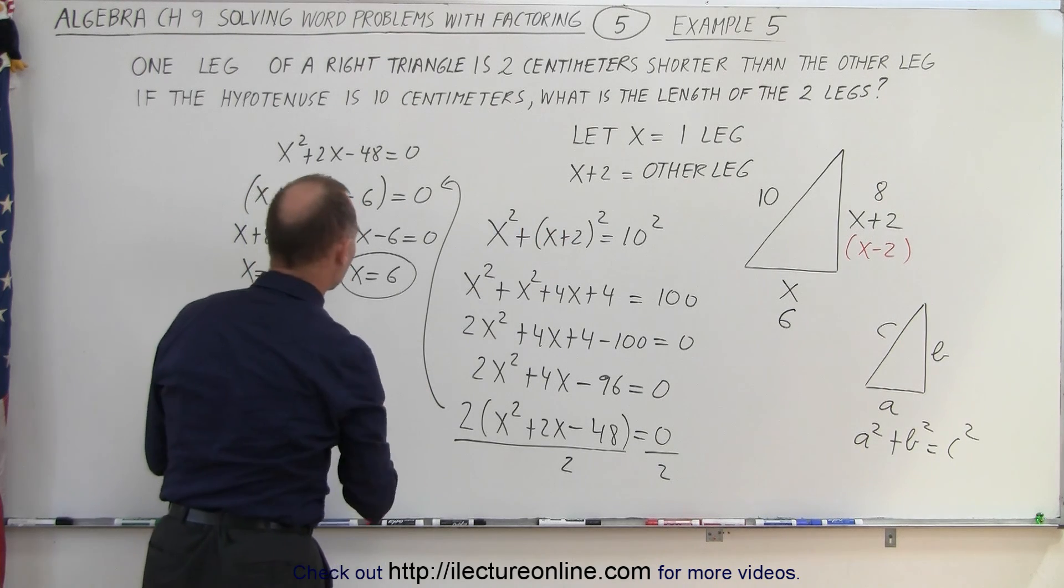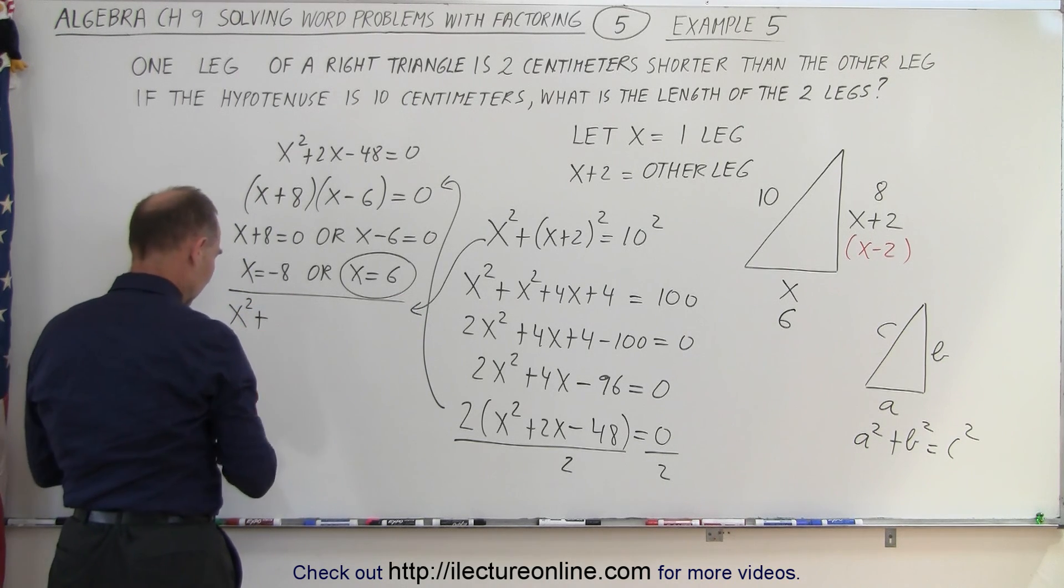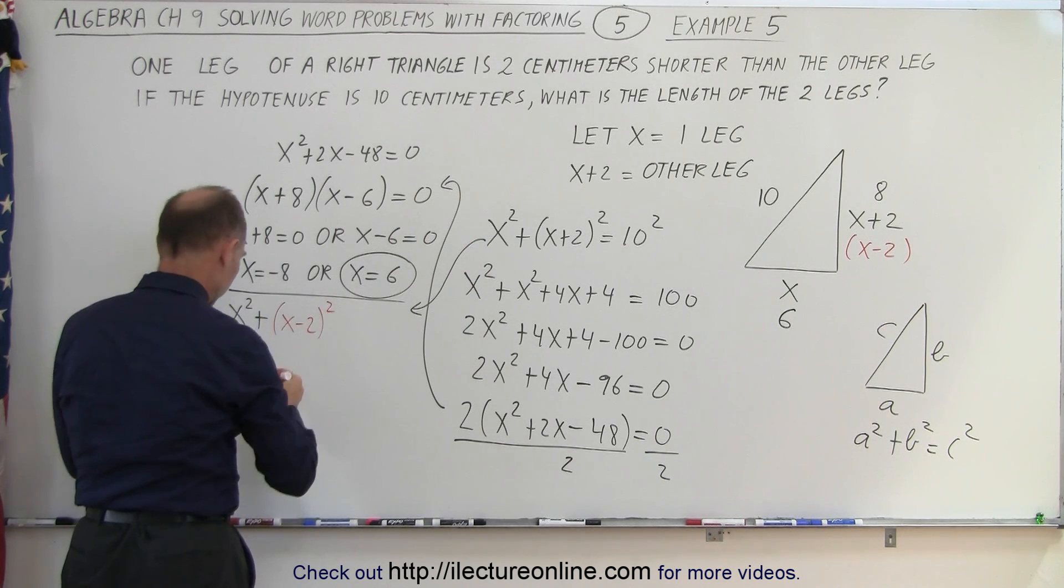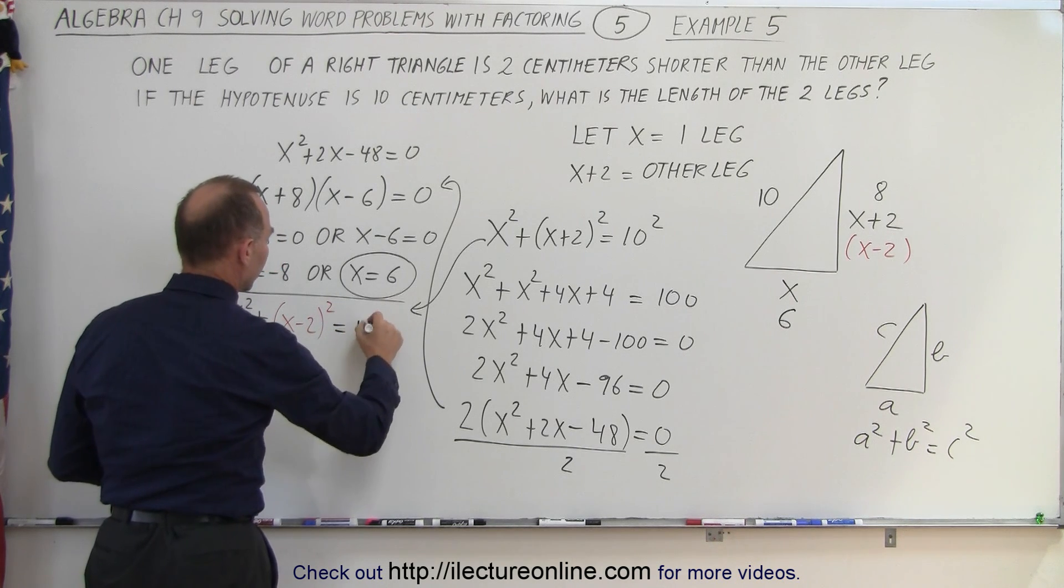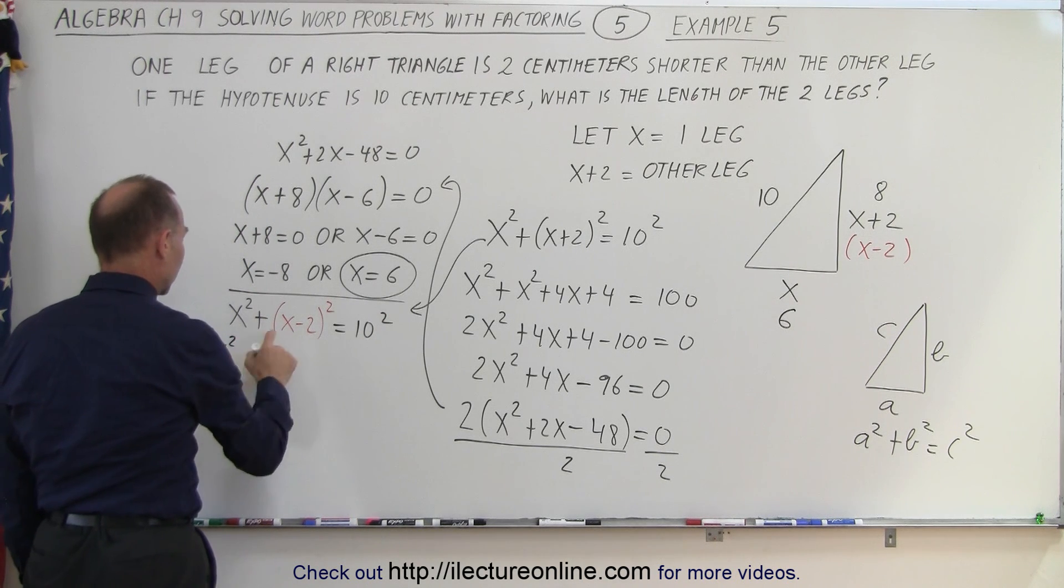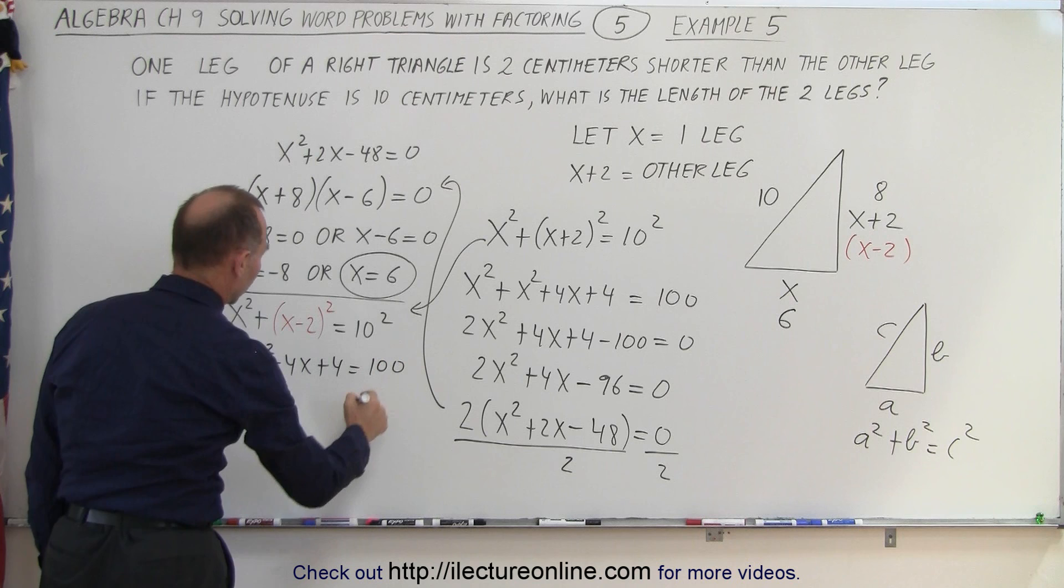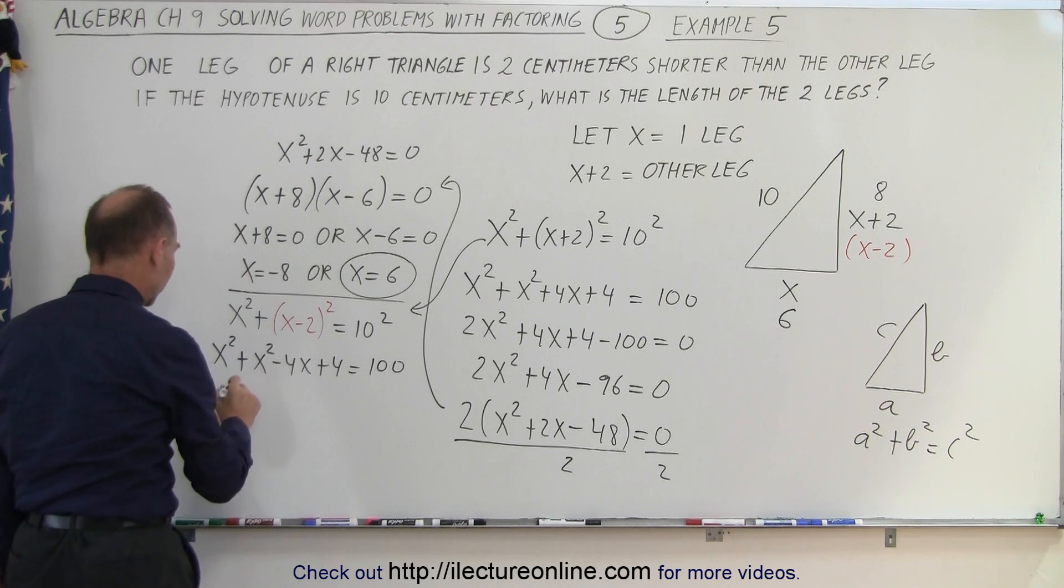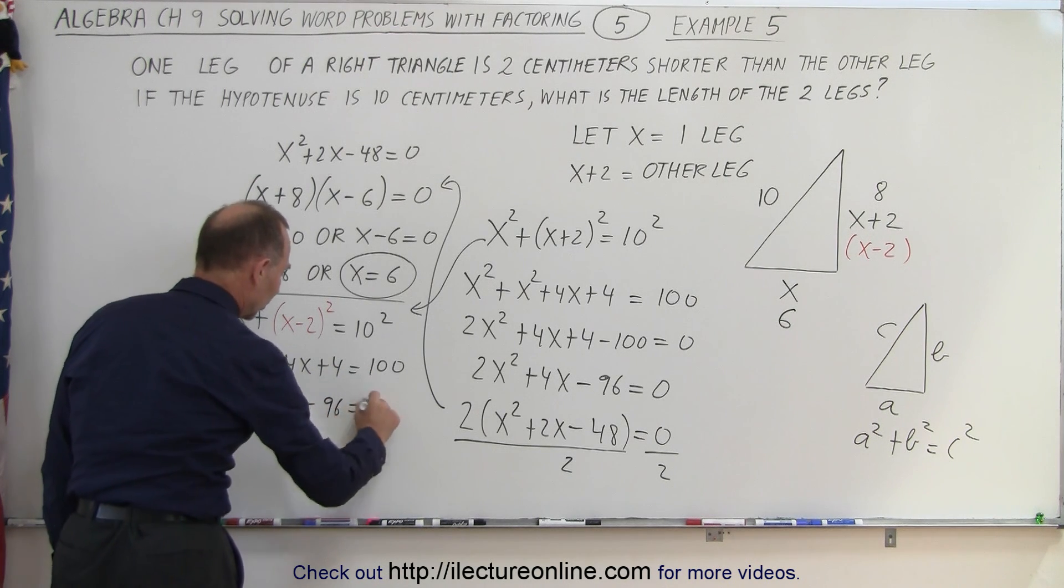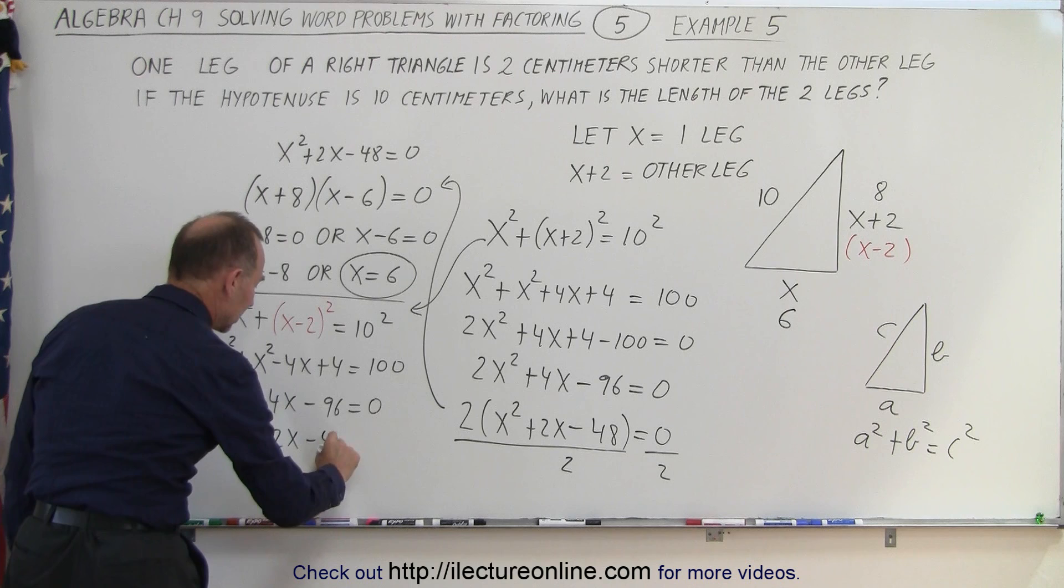Well, we get the very same equation except in this case we're going to do it like this: we're going to get x squared plus (x minus 2) squared equals 10 squared. So now let's go ahead and work this problem out and see what we get. This would be x squared, and then when we square this we get plus x squared minus 4x plus 4 equals 100. Collecting common terms and bringing this across, we'll get 2x squared minus 4x plus 4 minus 100 is minus 96 equals zero. And dividing everything by 2, we get x squared minus 2x minus 48 equals zero.